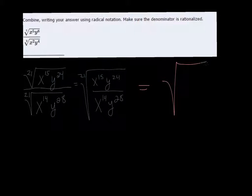So I'm going to have the 21st root. Now 15 minus 14 is x, and it's positive, so it goes on top. But 24 minus 28 is negative 4, so it's y to the 4th, but on the bottom since it was negative.